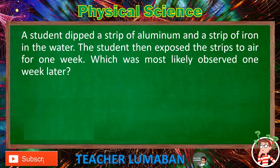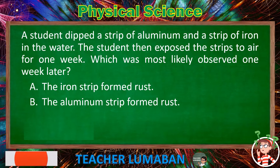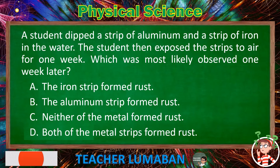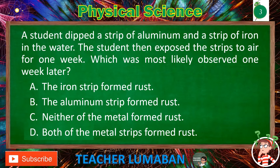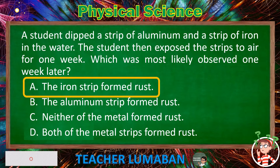A student dipped a strip of aluminum and a strip of iron in water. The student then exposed the strips to air for one week. Which was most likely observed one week later? Letter A: The iron strip formed rust. Letter B: The aluminum strip formed rust. Letter C: Neither of the metals formed rust. Letter D: Both of the metal strips formed rust. The correct answer is letter A, the iron strip formed rust.